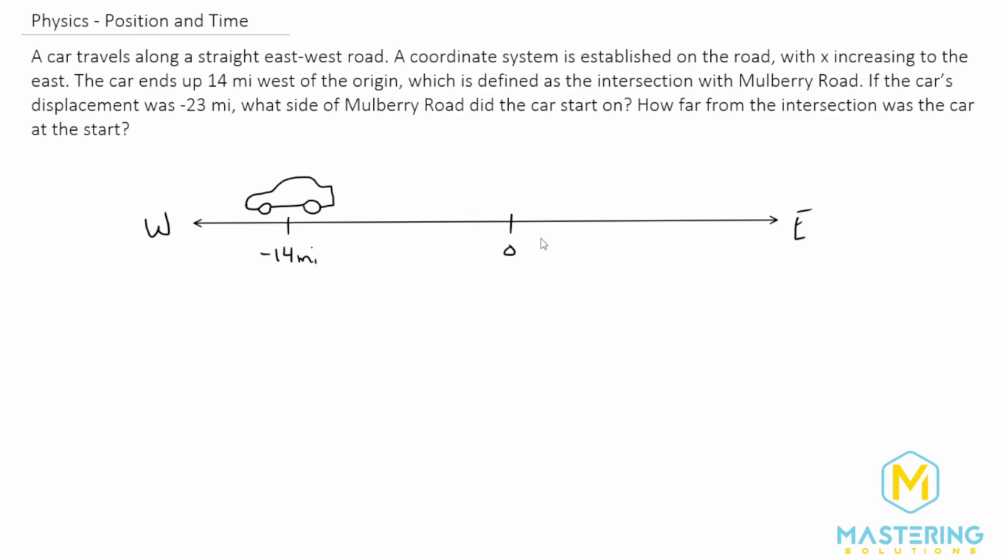This is a little confusing the way they worded it. What they mean is right here at the origin is Mulberry Road. When I first read it, I thought the negative 14 miles was the intersection with Mulberry Road, but the origin is Mulberry Road.